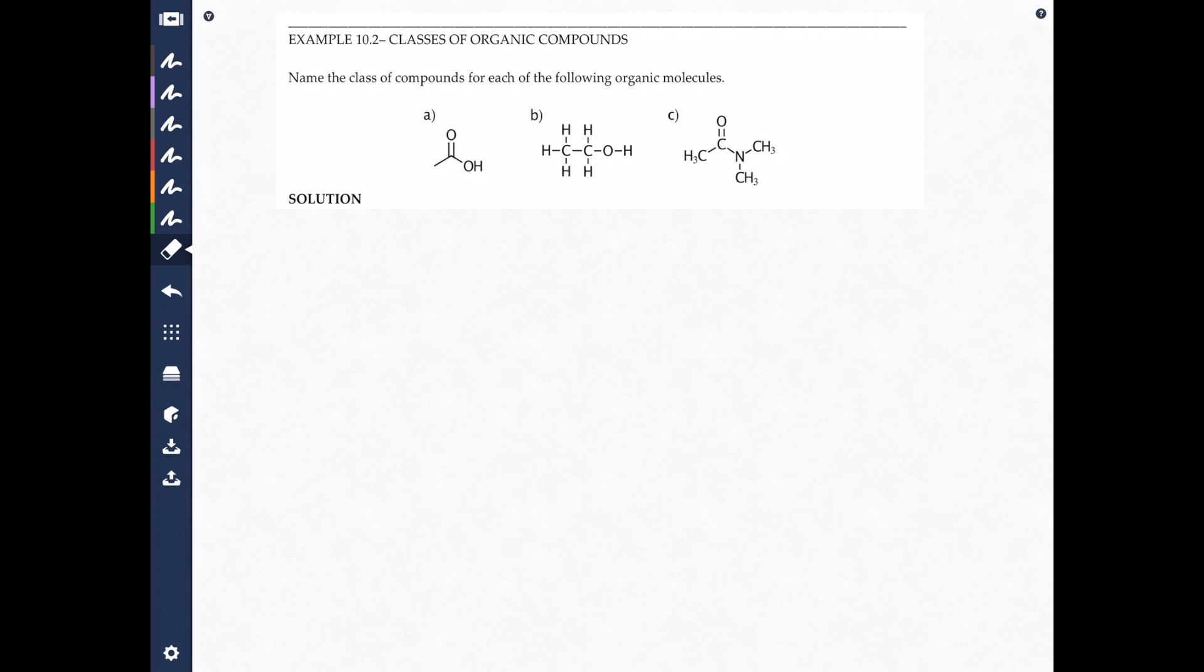Name the class of compounds for each of the following organic molecules. This is a pretty standard question and something you really need to know. Classes of compounds are used across most biological sciences: chemistry, biochemistry, biology, genetics, proteomics. Almost every medical field will involve you having at least a basic understanding of the names of some of the more important classes of compounds such as alcohols, amines, and carboxylic acids because they're very common in biological systems.